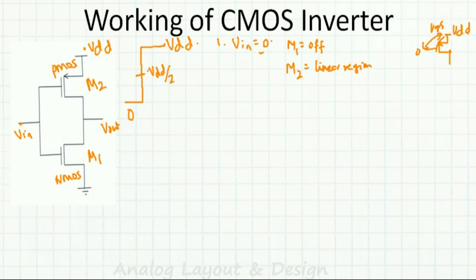The equivalent circuit in this case: the top PMOS switch is on with some on-resistance R_on, and the bottom NMOS switch is open. So VOUT is tied to VDD through a small resistance, meaning VOUT equals VDD.